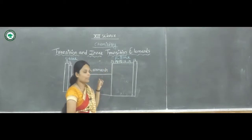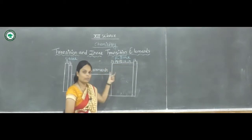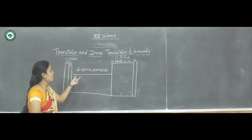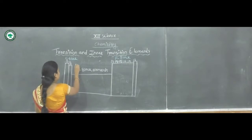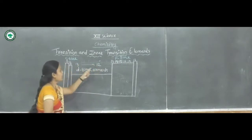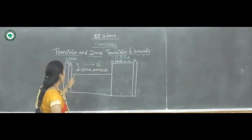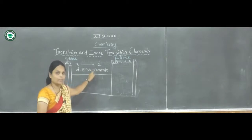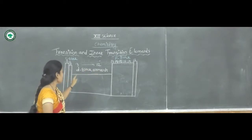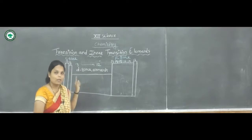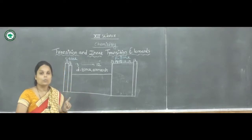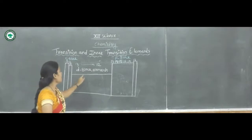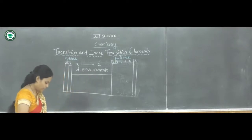The P-block contains groups 13 to 18 — six groups in total. The D-block of elements contains groups 3 to 12, meaning ten groups are present in the D-block of elements.